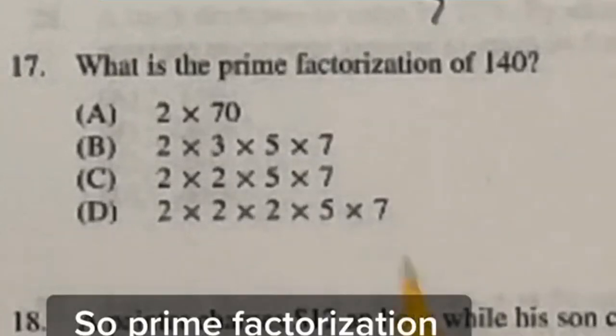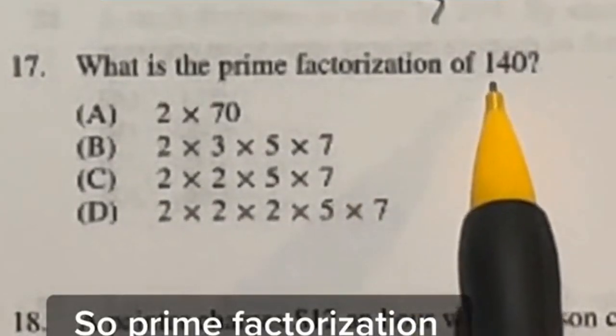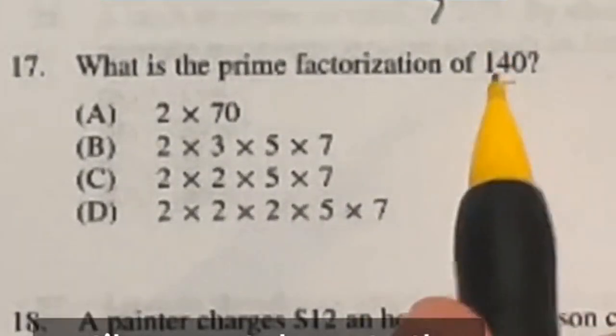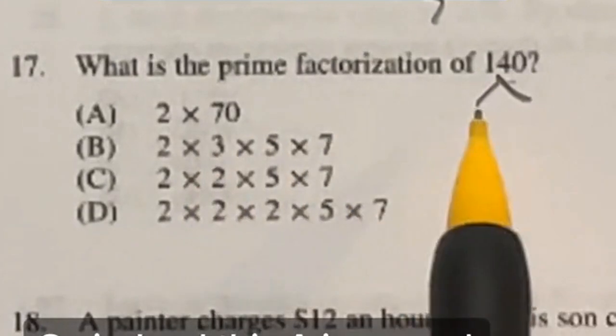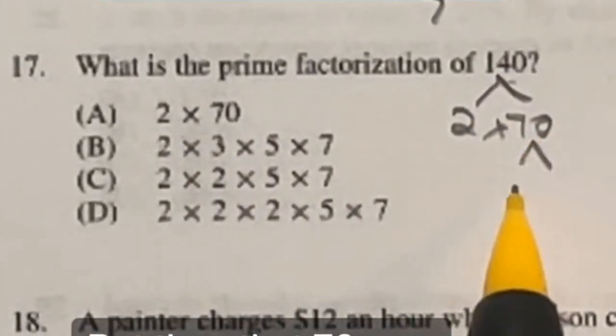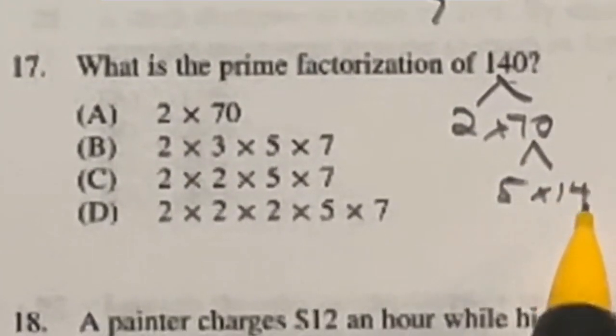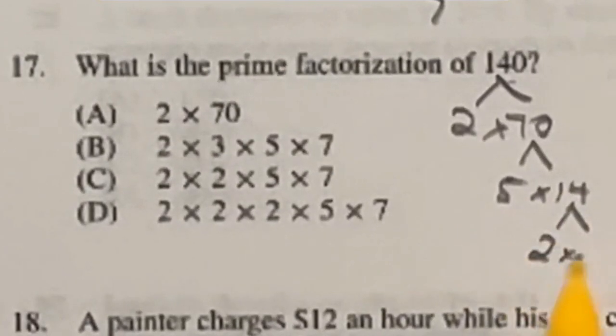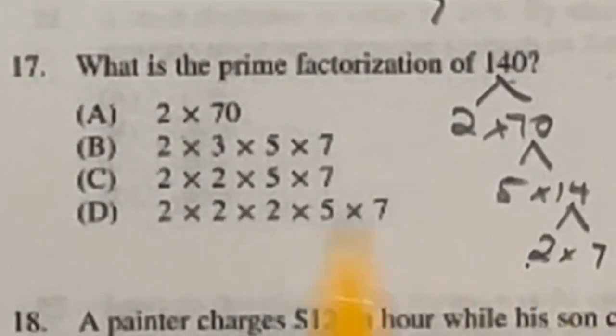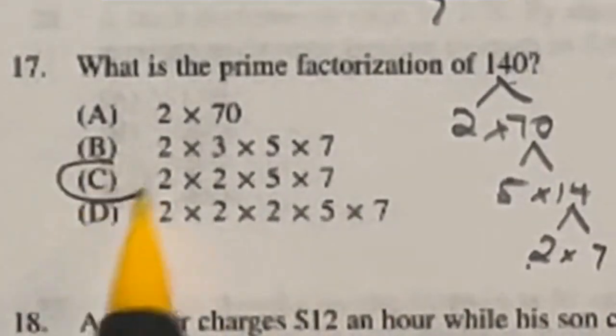So prime factorization means you break down all numbers that divide this guy until you get down to the basics that can't be divided any further. So indeed, this A is a good starting point of 2 times 70, but then that 70 can continue to split to 5 times 14, and that 14 can continue to split to 2 times 7. So looking all together here, we have 2, 2, 5, and 7. So looking at the answers, that would be answer C.